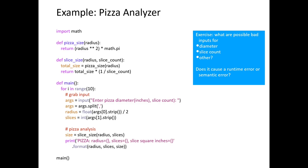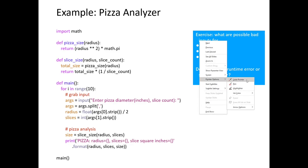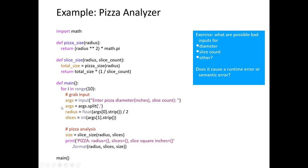Quick quiz: when we use input, what type of data do we get back? If you said string, you are correct — input always returns a string. So whatever is returned, we have to process it. We call split on the input, which takes a string and turns it into a list of items divided by the delimiter — a comma in this case. This takes a comma-separated string and turns it into a list of strings.